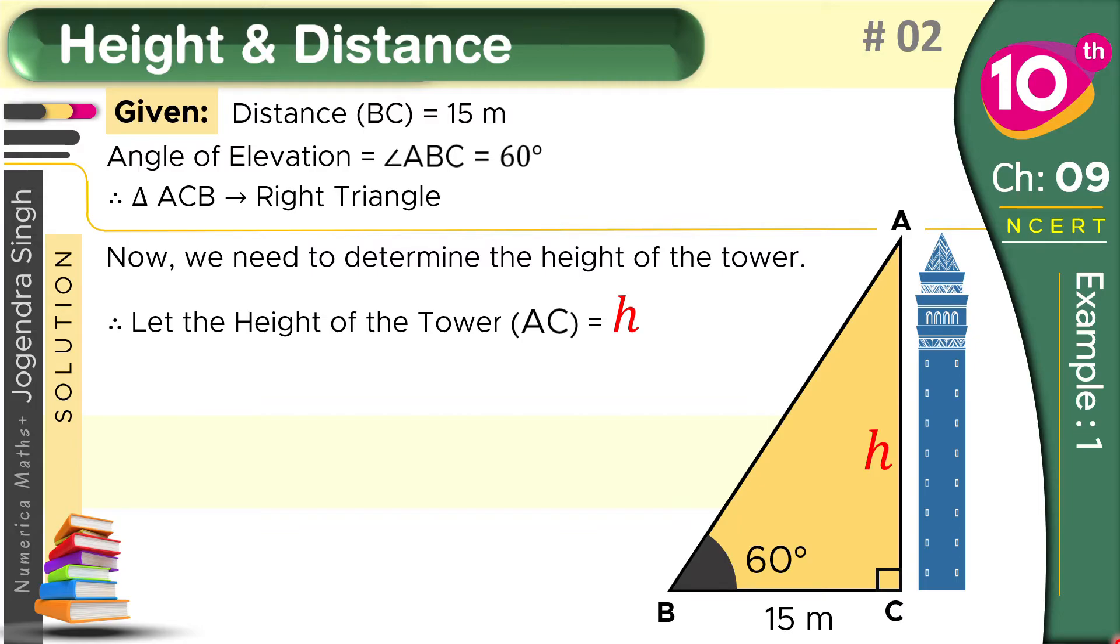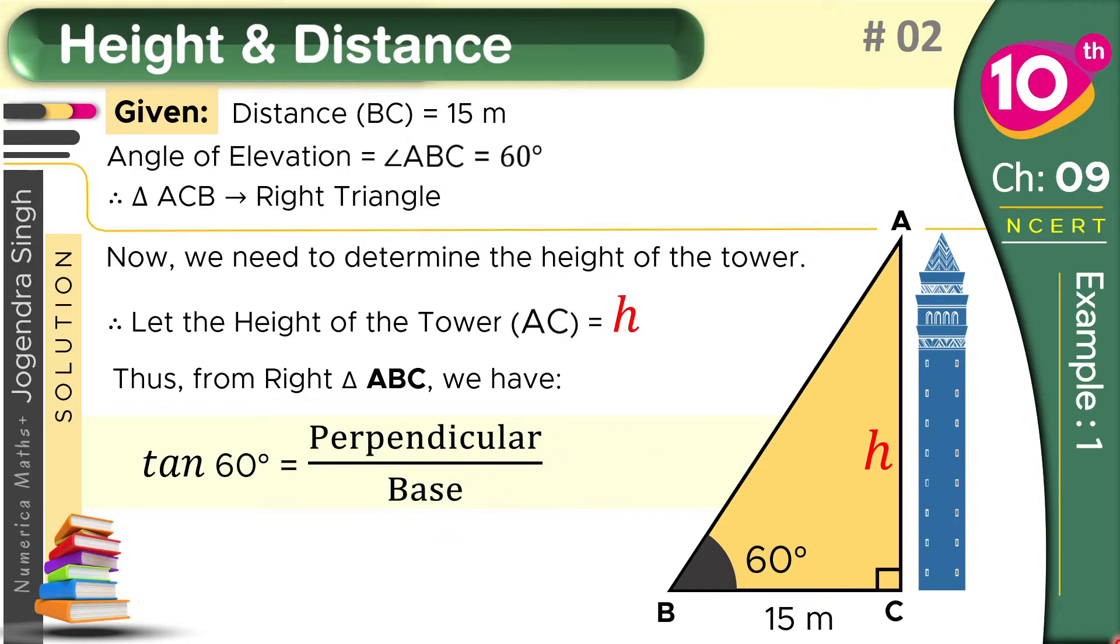See how it will be possible. Thus, from right angle triangle ABC, we have tan 60 degrees equals perpendicular upon base. We know that the ratio of tangent is always fixed: perpendicular upon base. Perpendicular is what is opposite to our angle. We have taken angle B, so opposite to it, the perpendicular becomes our AC. Then the base becomes our BC.